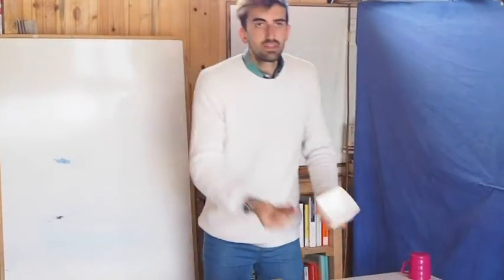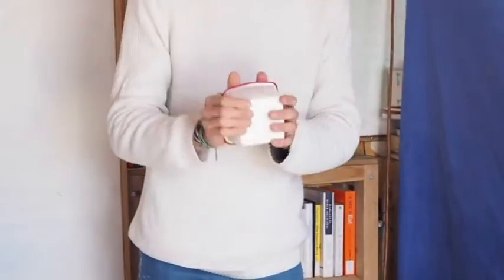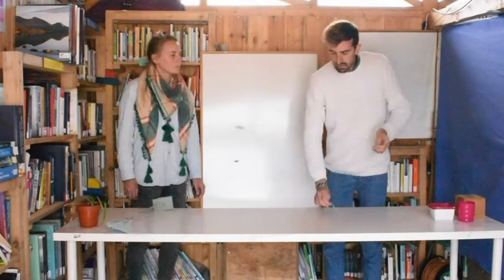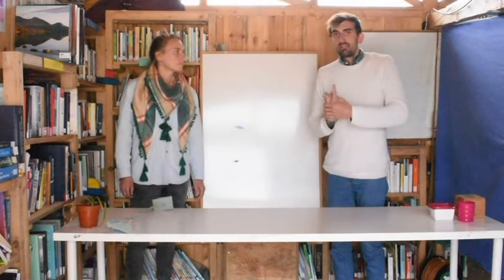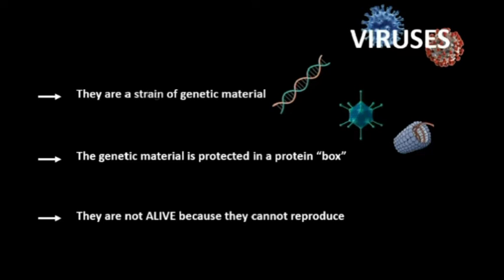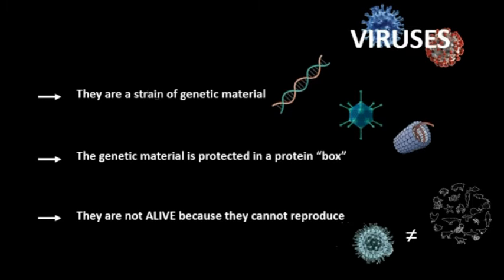Why is this different from a bacteria or from us? The main difference is that the virus cannot reproduce. Let's imagine we have a cell. Cells are the smallest piece that build anything that is alive. For example, us human beings, we are made out of cells, and so are animals, plants, and bacteria that are made out of only one cell.